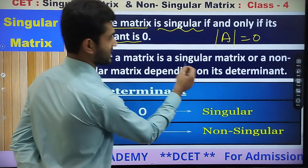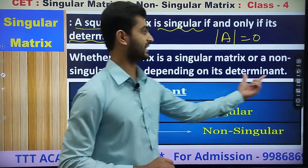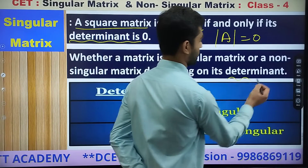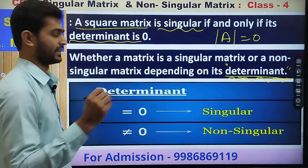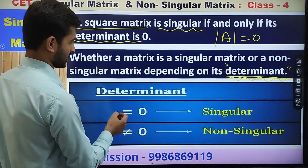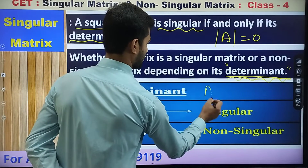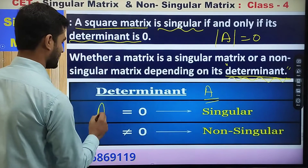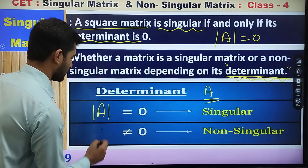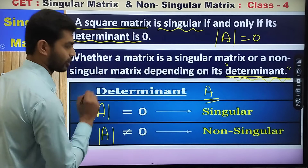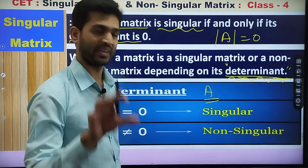Whether the matrix is singular or non-singular depends upon its determinant. If the determinant of a square matrix A is not equal to 0, then we are going to call it a non-singular matrix. If determinant of A equals 0 then A is singular, and if determinant of A is not equal to 0, then A is a non-singular matrix. This is the basic concept.